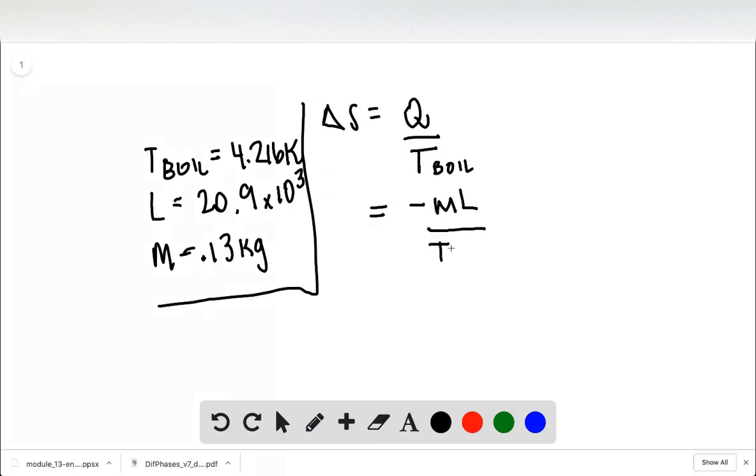We divide that by T-boil. If you plug in these three numbers into your calculator—I got the L and T-boil from chapter 17, taking the hint—you'll get minus 644 joules per Kelvin.